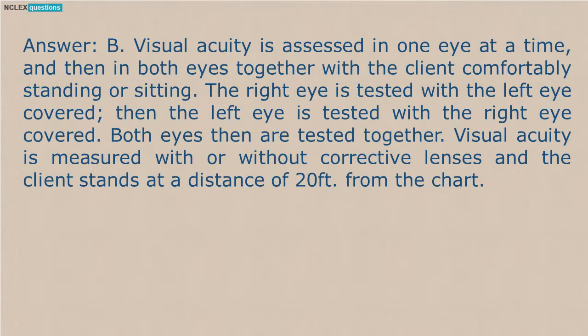Answer: B. Visual acuity is assessed in one eye at a time, and then in both eyes together with the client comfortably standing or sitting. The right eye is tested with the left eye covered, then the left eye is tested with the right eye covered. Both eyes are then tested together. Visual acuity is measured with or without corrective lenses and the client stands at a distance of 20 feet from the chart.